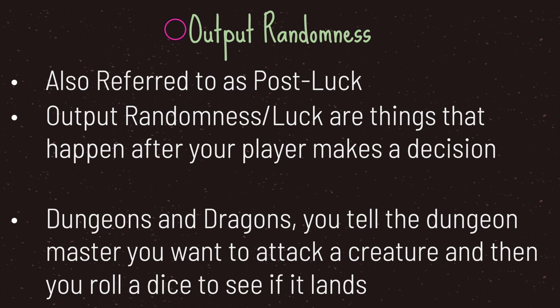A great example is Dungeons and Dragons. When you encounter an enemy you have many choices — you can choose to run, talk to the creature and try to seduce it, or attack the creature. But no matter what decision you make, after you make your decision you need to roll a pair of dice to determine if what you want to do is successful. In this case, the rolling of the dice is your random event and it happens after the player makes their decision. This is considered output randomness.